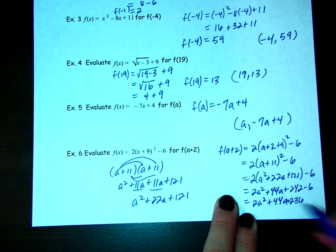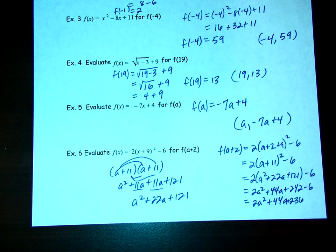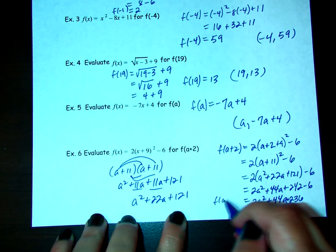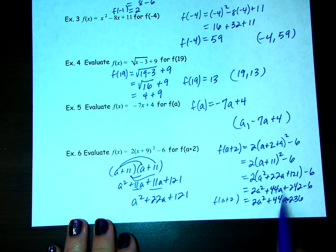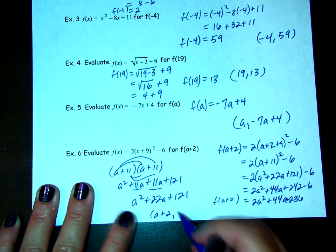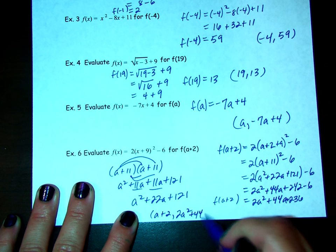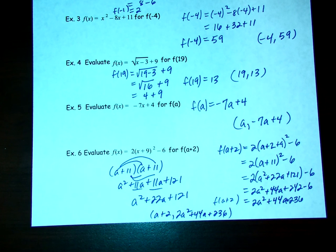Sorry, I forgot the little plus sign in there. So 2a² + 44a + 236. And that's my f(a+2). And I could write this as a coordinate pair, where I say a+2 is my input, and then 2a² + 44a + 236 is my output.